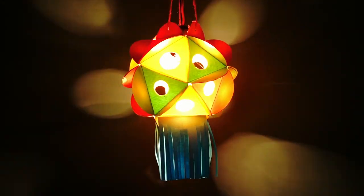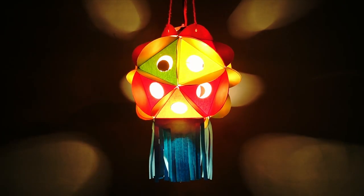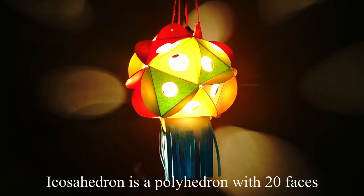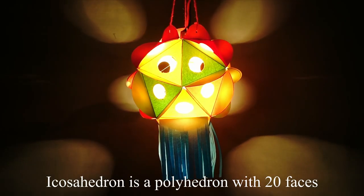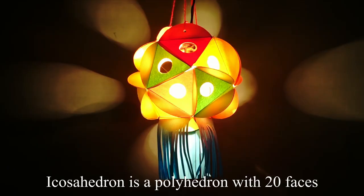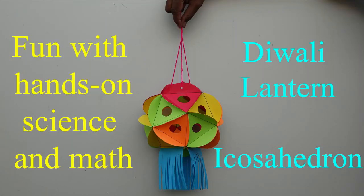Hello friends, today we are going to learn how to make a geometric lantern. We are going to make a shape of a platonic solid called icosahedron. Icosahedron has 20 sides.